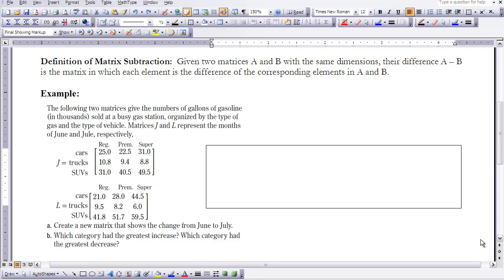So what we want to do is for part A, we want to create a new matrix that shows the change from June to July. So if we're going to do the change from June to July, we're going to subtract. If we look at elements that are the same, we've got regular cars and regular cars. And so the change from June to July was a decrease in 4,000 gallons. If we do a decrease from the cars using premium versus in June and July, we would see that there was an increase of 5.5. So I want you to stop the video at this time and fill in your matrix that shows the comparison from June to July.